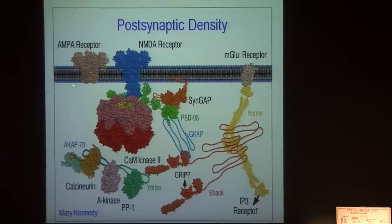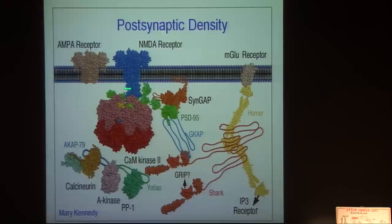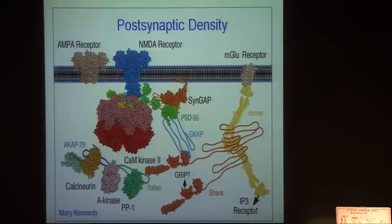The ones we're particularly interested in are the glutamate receptors: the fast AMPA receptor on a millisecond timescale, and the NMDA receptor, which when glutamate binds opens a channel that lets calcium through — on a timescale of hundreds of milliseconds. There's also a metabotropic receptor, so there's a variety. Just below the surface are very large molecules, and in particular CaMKII — CaM kinase 2 — which we're going to be focusing on.